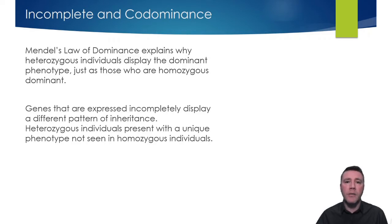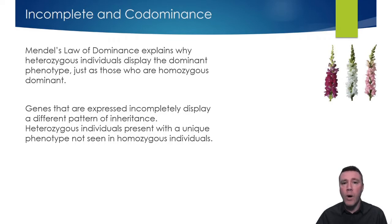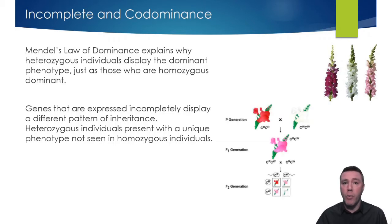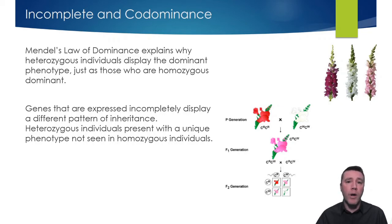This is the case with incomplete dominance. In certain varieties of snapdragon flowers, three distinct phenotypes exist: red, white, and pink. Individuals that are homozygous, like those in the parental generation in this diagram, display the phenotype for the only alleles they possess. Carrying two red alleles for color results in a red phenotype, and carrying two white alleles results in a white phenotype. But it's the heterozygous individuals, that have received one red and one white allele, that display a unique, blended, or mixed phenotype that is not present in the parental generation.